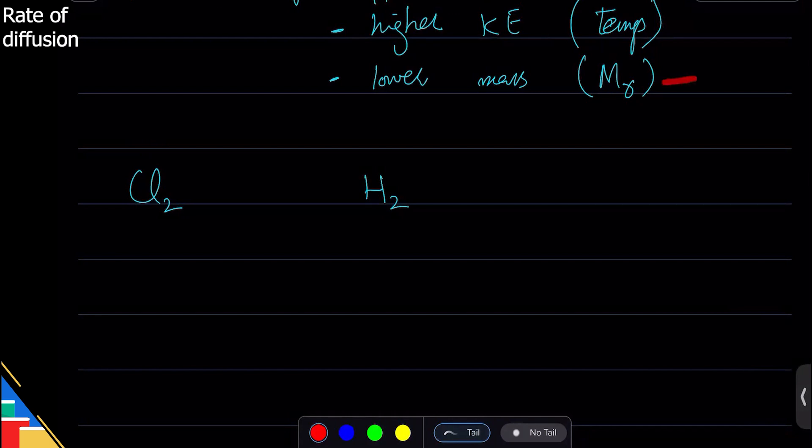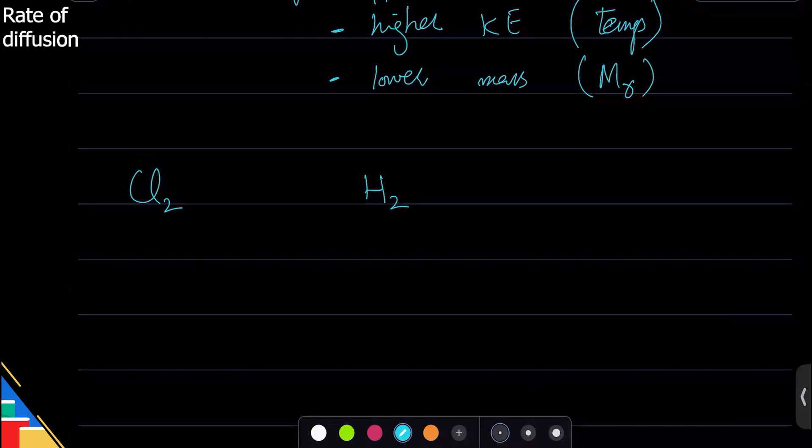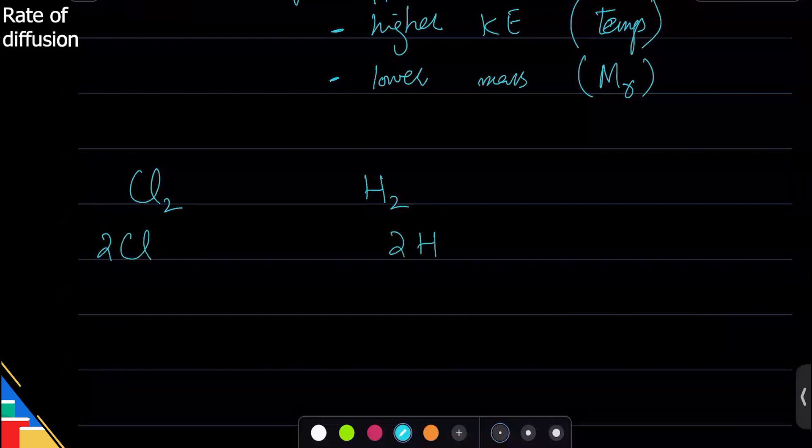But Mr. So how do we calculate Mr? We look at in the periodic table and we add average mass of all the atoms. So for chlorine we have two chlorine atoms and for hydrogen we have two hydrogen atoms.